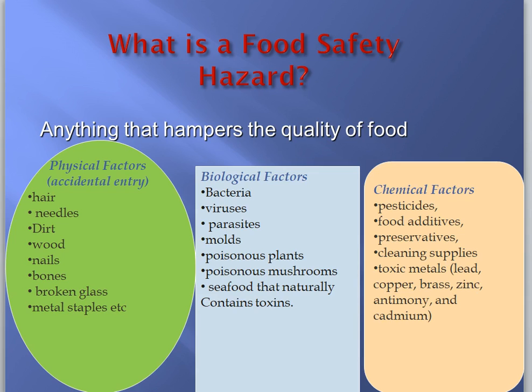When chopping meat on a wooden cutting board, a small bit of wood could enter the food - that is a physical hazard. There could also be nails: if the person processing food is not maintaining proper hygiene and not wearing a glove, a bit of their nail can happen to enter the food.